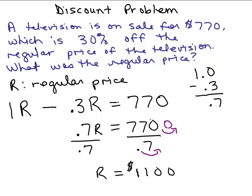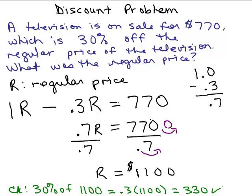But we could easily check what is 30 percent of $1,100. That's 0.3 times 1,100 and that is $330. So if you take $330 off of this $1,100, you do get $770. So it does make sense that this regular price of the television set is $1,100.